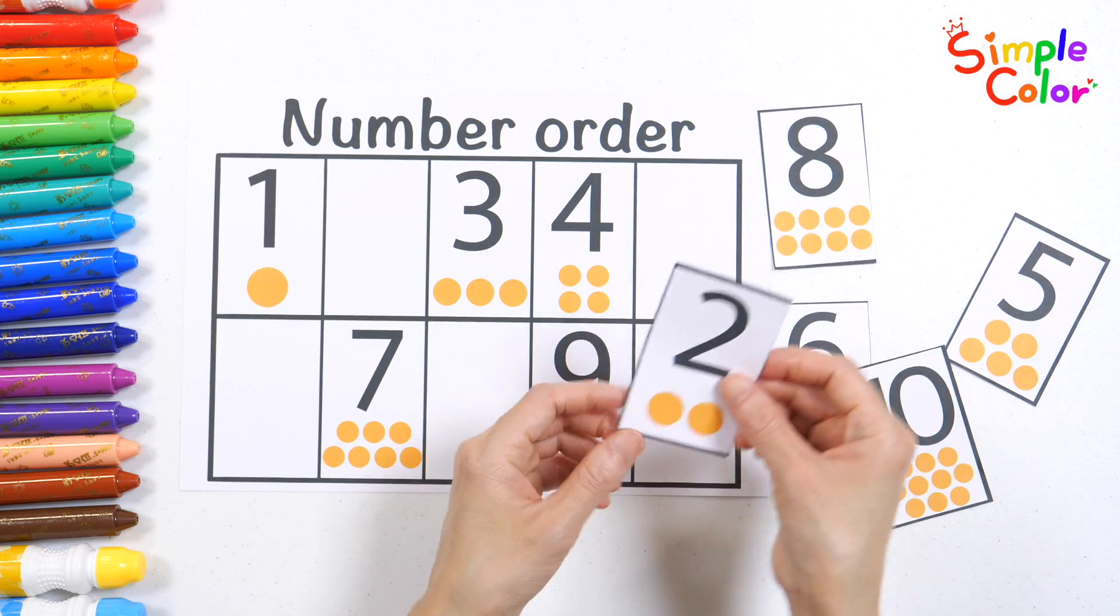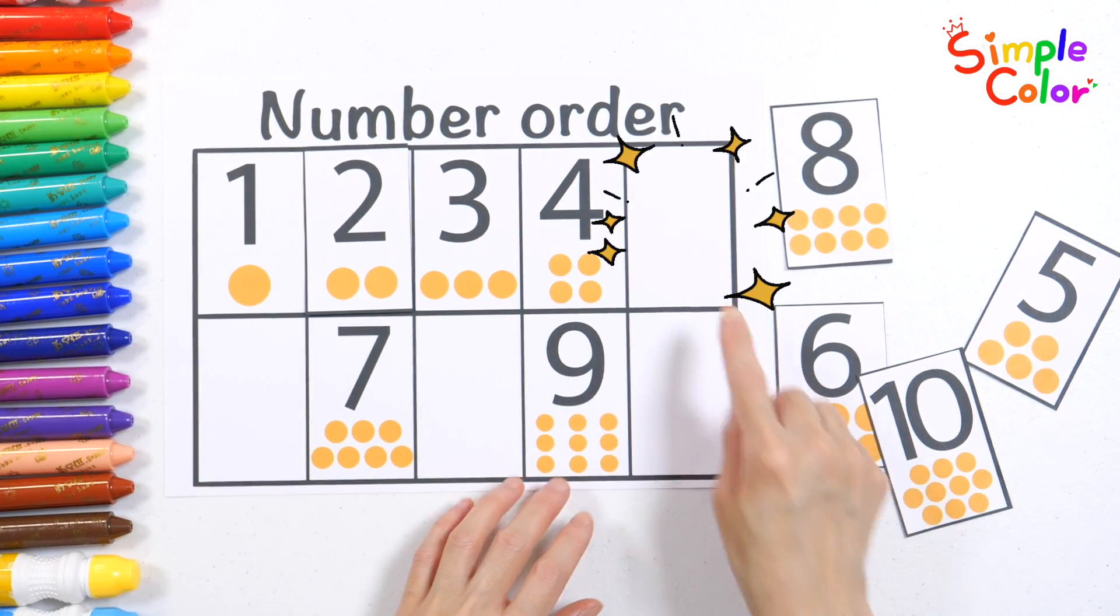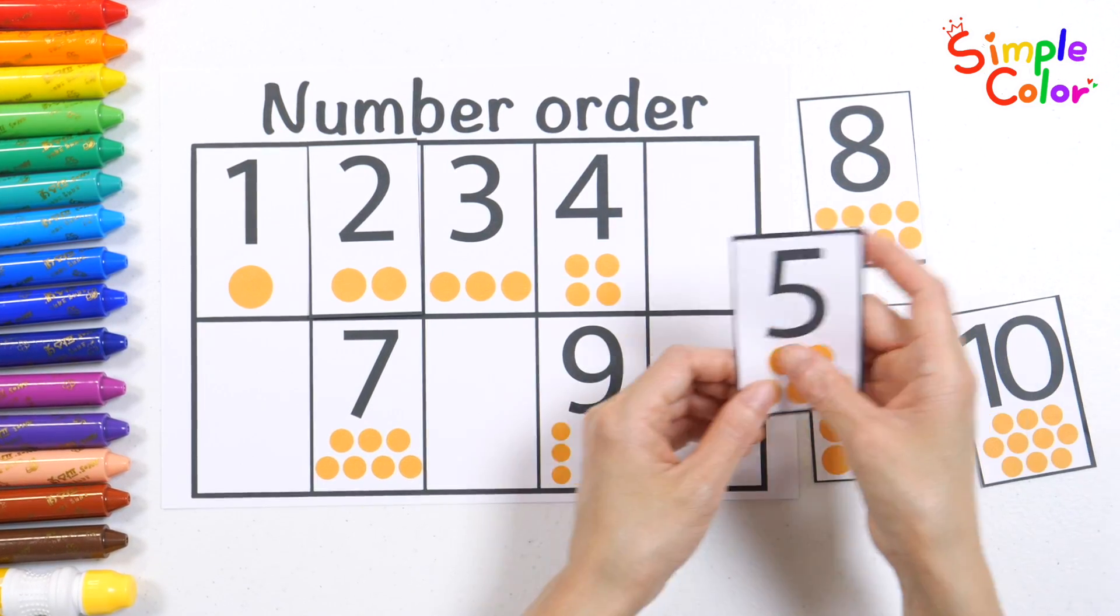That's right, it's the number 2. What number comes after 4? The answer is 5.